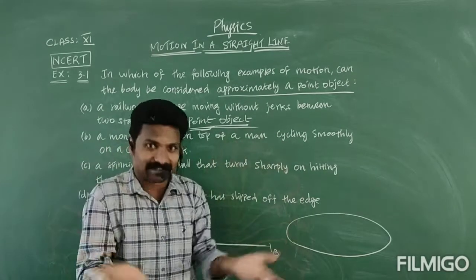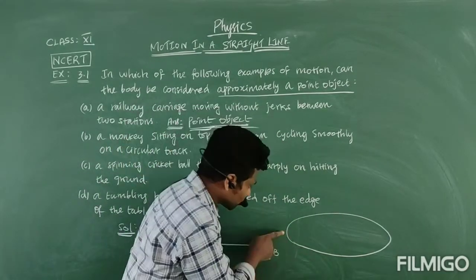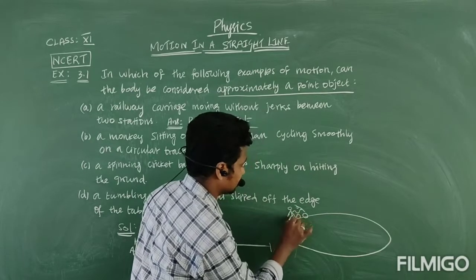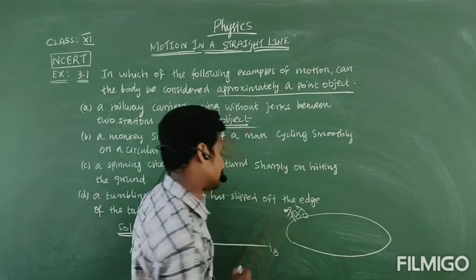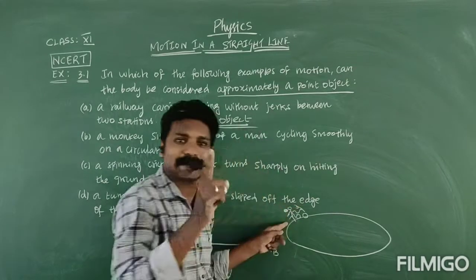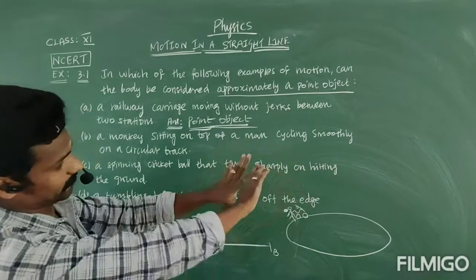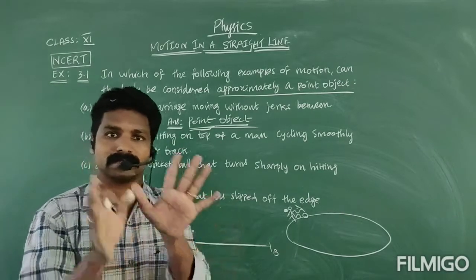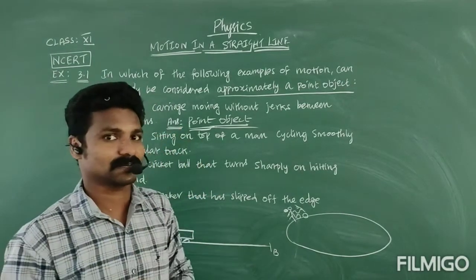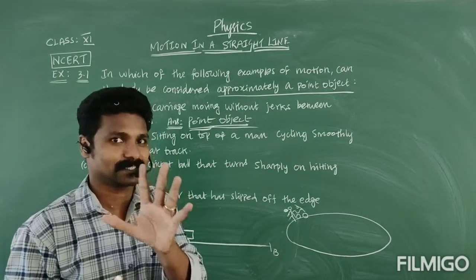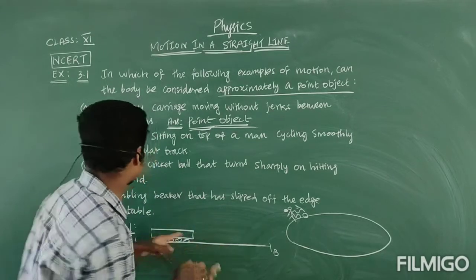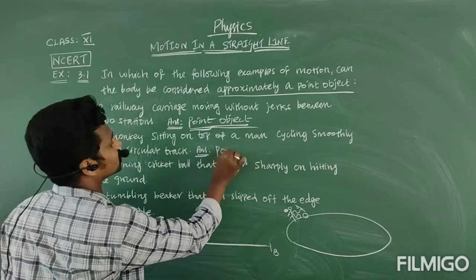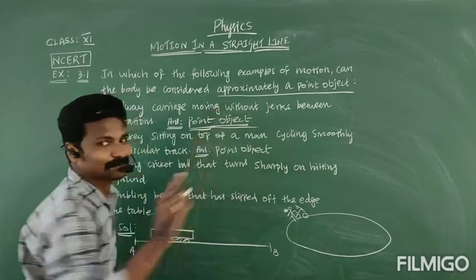You are standing at a distance observing the entire track. In that much distance, the cycle is visible and that man is also visible, but the monkey is not visible that much. So in this situation, we can say this is also considered a point object.